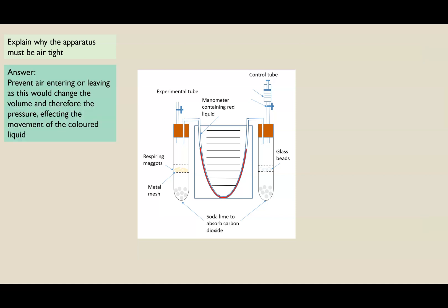So number one, why does it have to be airtight? Well, the whole reason the liquid moves is because of pressure changes. And if any gases could enter or exit, then it would mean that the pressure changes are no longer due to the respiring maggots. It's due to another factor. So it's going to affect the movement of the liquid. So that's why we need to make sure it's completely airtight.